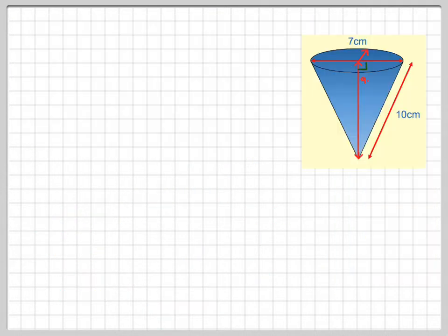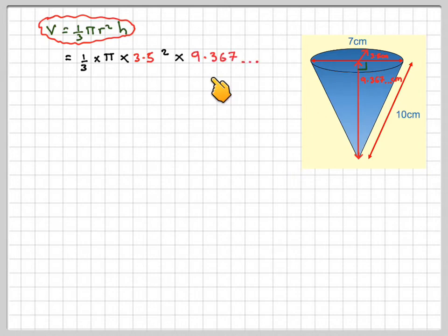So going now to try and define the volume. So we now know this is 9.367, and this is 3.5 centimeters of radius. The volume is 1 third of pi r squared h. So it's going to be 1 third times pi times r, which is 3.5, and we need to square that,